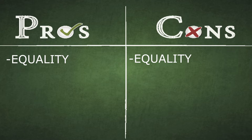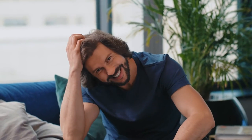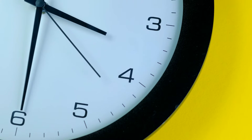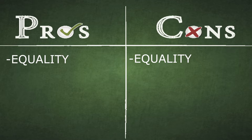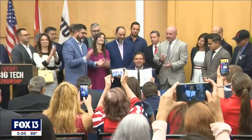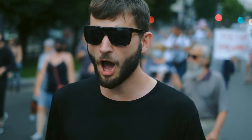Con — Equality: every vote counts the same, even if you voted randomly. People can also be misinformed or have limited knowledge of what they are voting for, and it takes time to make an informed decision. Pro — Responsive: the government can quickly make changes to laws and policy without needing to debate and discuss these internally — the people have spoken.